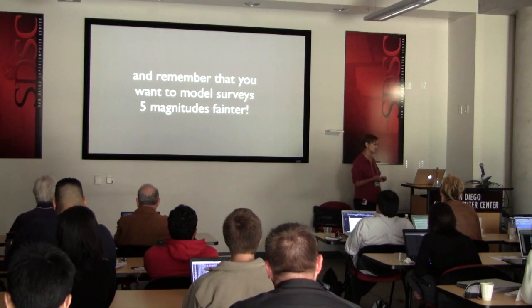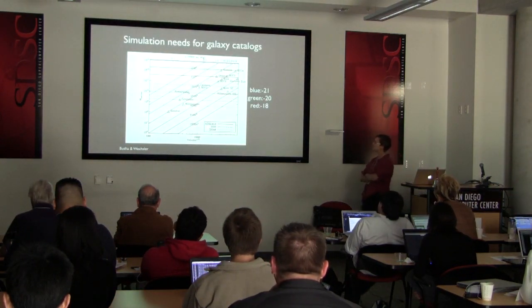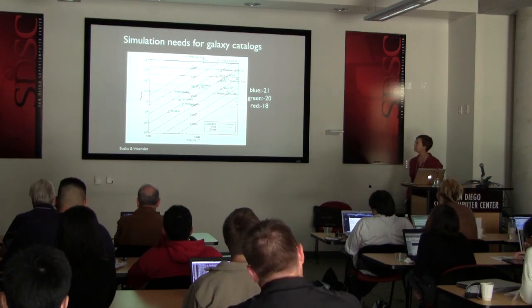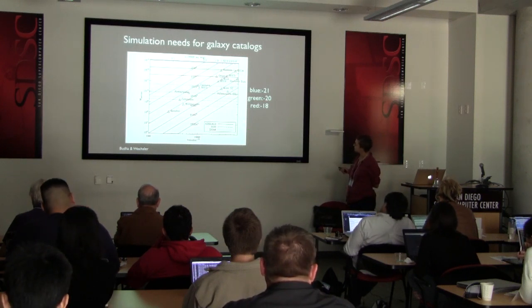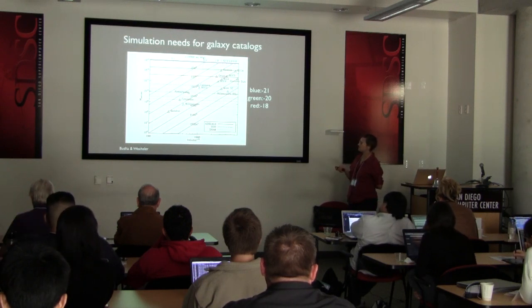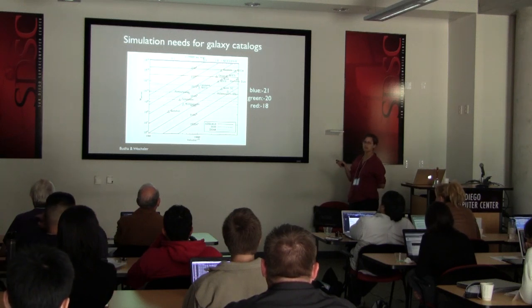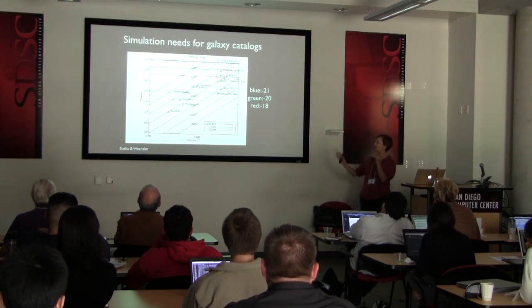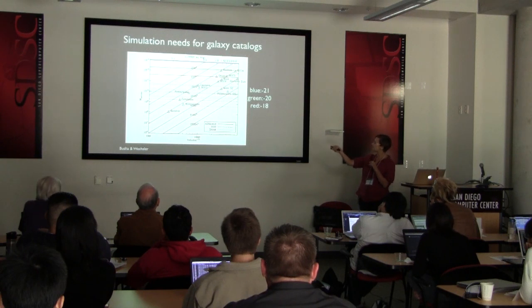Actually, the simulations you would really like to have to even model existing surveys don't exist. With very high resolution simulations you can get one spectroscopic survey, but what we really want is to model the full Sloan photometric survey, which is much more volume than the spectroscopic survey. And in the next decade you're going to want to model surveys about five magnitudes fainter. Tomorrow I'll talk about some of the methods that might allow us to achieve this.